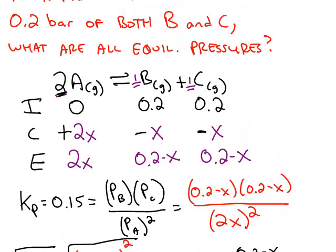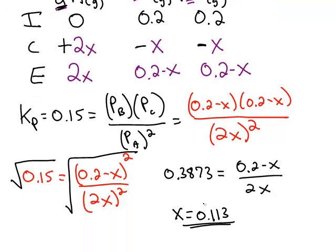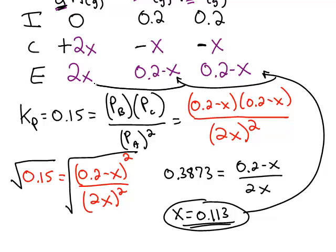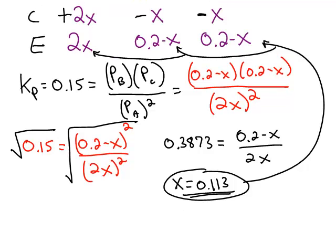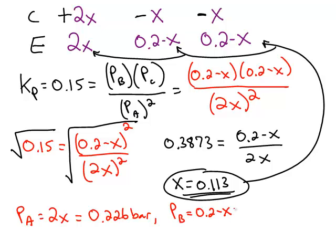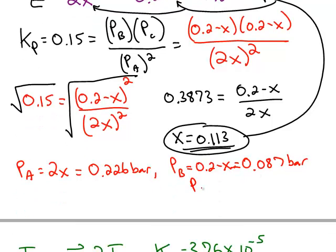The question was, what are all the equilibrium pressures? So I take this 0.113 and substitute it back into the equilibrium row of the ICE chart to give me all of my answers. Pressure of A is 2 times X. 2 times 0.113 is 0.226. The pressure of chemical B was 0.2 minus X, which is 0.087. And the pressure of C was also the same as the pressure of B, 0.087 bar.